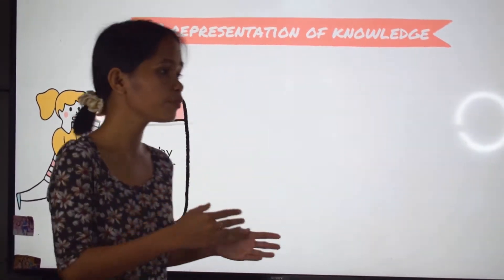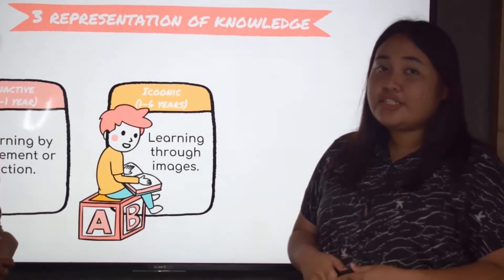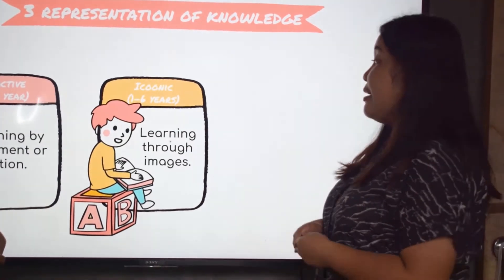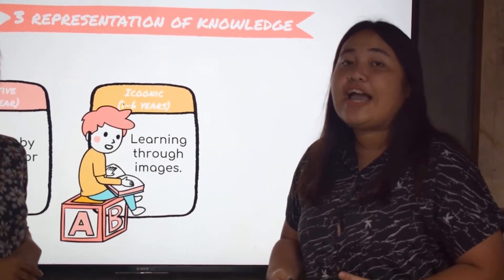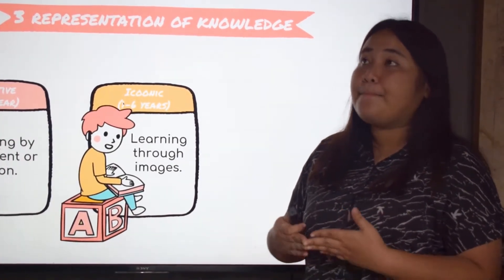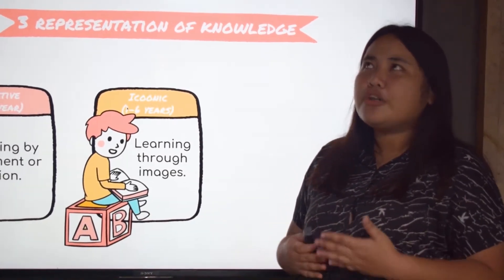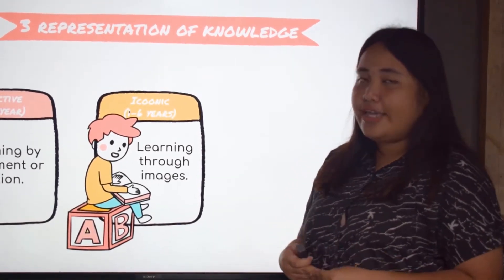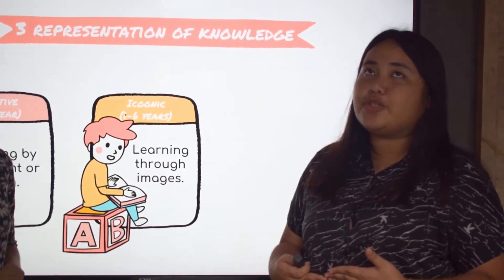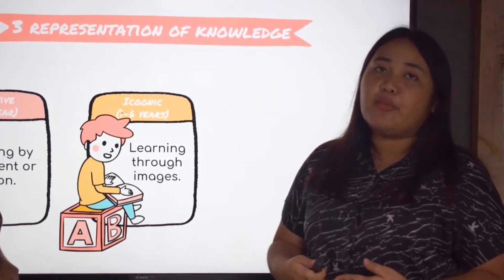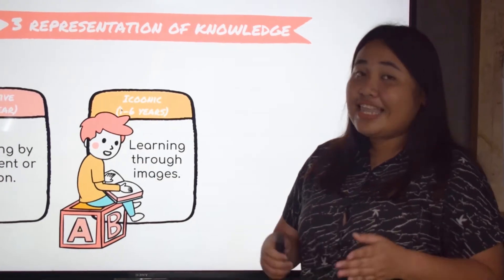We also have iconic, which happens from one to six years. That means learning through images — students learn through models or pictures. That is why it is beneficial that when we are learning a new topic, there is a diagram or example to come along with the verbal information.